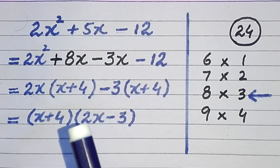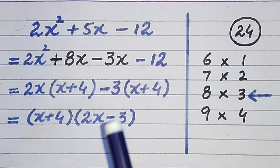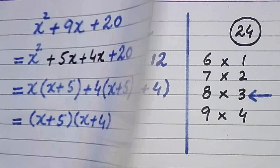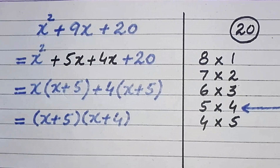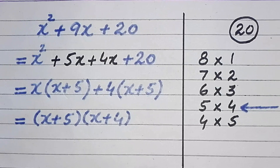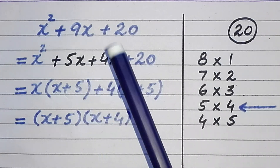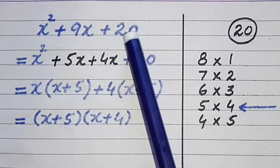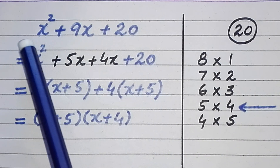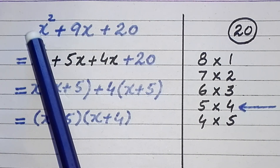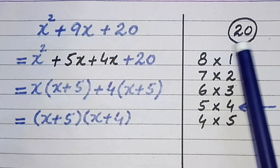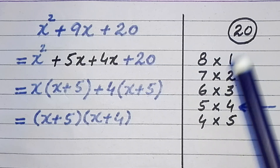For better understanding we will discuss one more question. In the first step we multiply the constant term and the coefficient of the quadratic term to find their product.